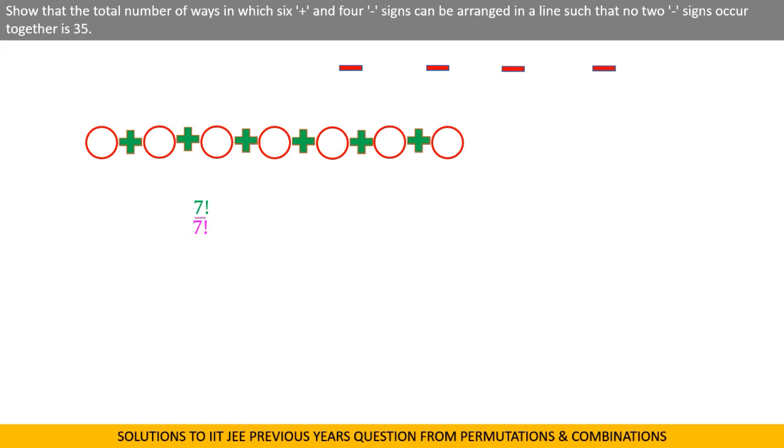Now it's turn for negative signs. Pick any one out of 4 negative signs. It can be placed in a row under given condition in 7 ways. Let us put it at first vacant place.